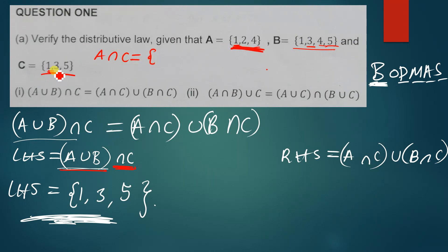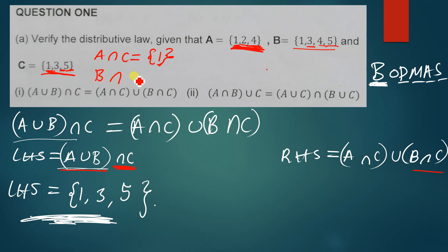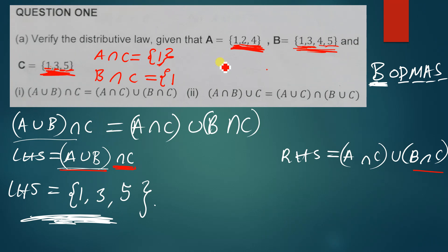A intersection C: we have one in A and one in C, so we write one. Two is in A but not in C. Four is in A but not in C. Five is in A — wait, no. So A intersection C is simply just one. Now let us find B intersection C — the common elements between B and C. We have one, three, and five common to both B and C.